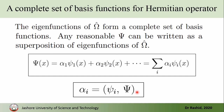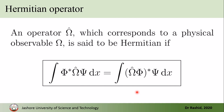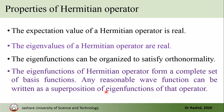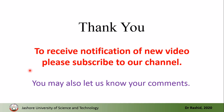So we have proven all the properties. For a Hermitian operator: the expectation value is real, the eigenvalues are real, the eigenfunctions can be organized to satisfy orthonormality, and their superpositions can be used to construct a wave function. In the next video we shall see some examples of Hermitian operators. That's all for today, thank you.